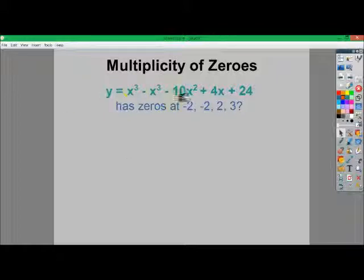So if I have y equals x to the fourth minus x to the third minus 10x squared plus 4x plus 24, eventually I can graph it and find out that it has zeros at negative 2, negative 2, 2, and 3.